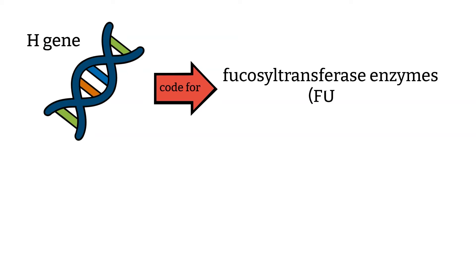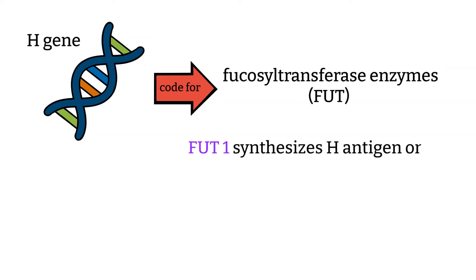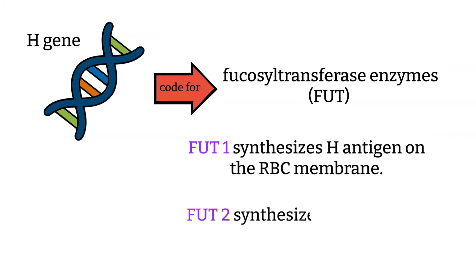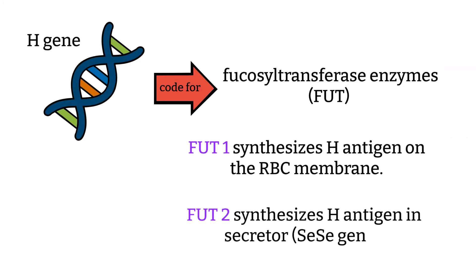The H antigen is coded for by fucosyltransferase enzymes which are capable of synthesizing H antigen. There are two such enzymes: FUT1 synthesizes H antigen on the RBC membrane, and FUT2 is the enzyme that synthesizes H antigen in secretions, if the secretor gene is also present.